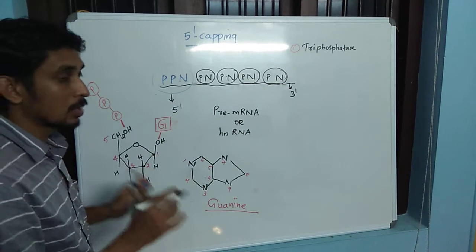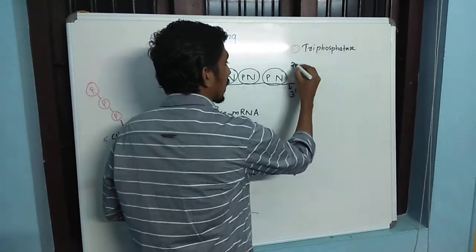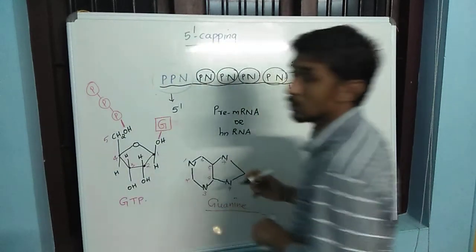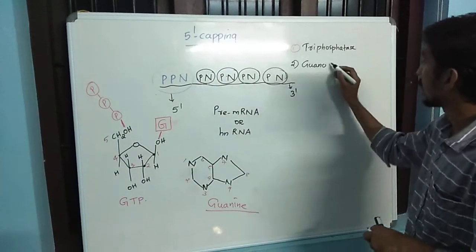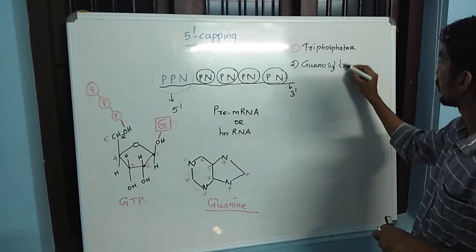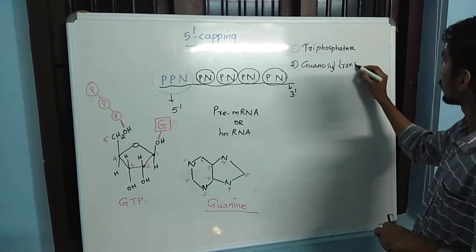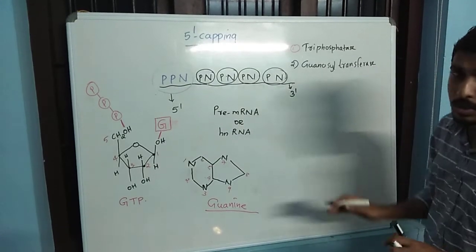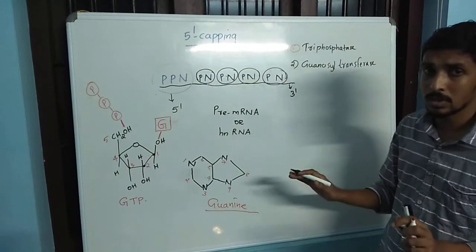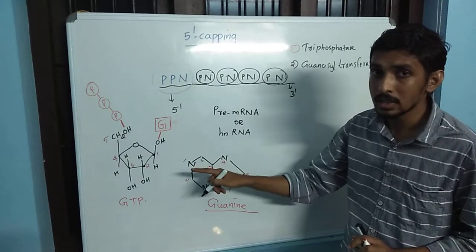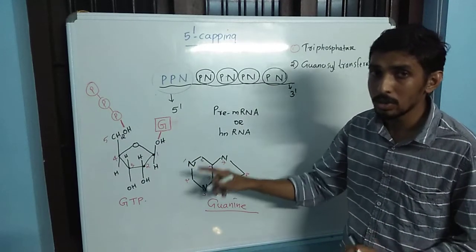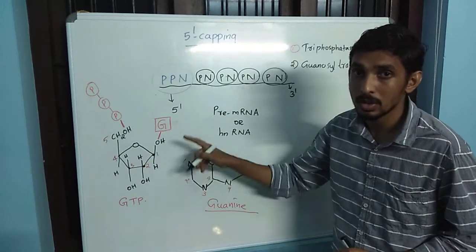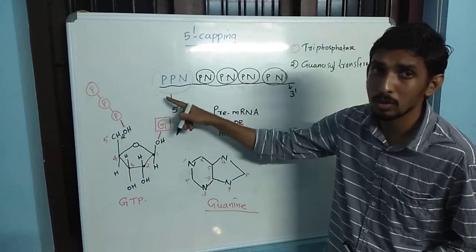The second type of enzyme is called guanosine transferase. The function of guanosine transferase is to add a nucleotide triphosphate called GTP, guanosine triphosphate, at the five prime end.